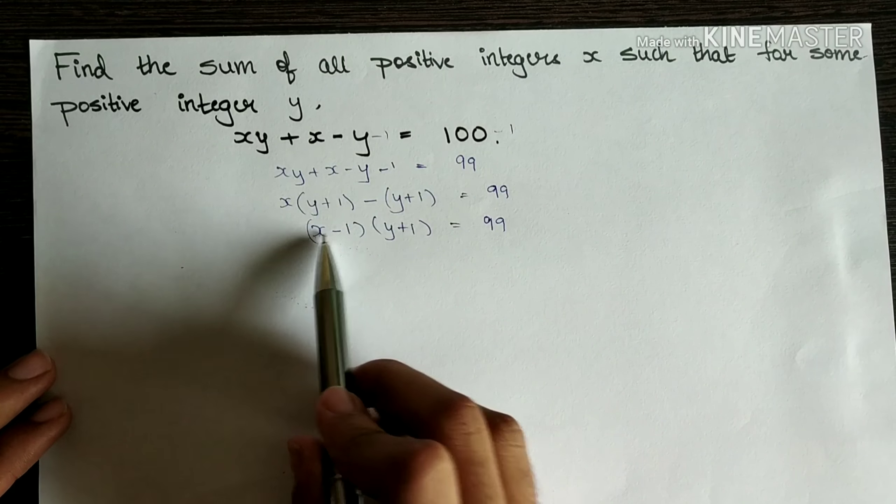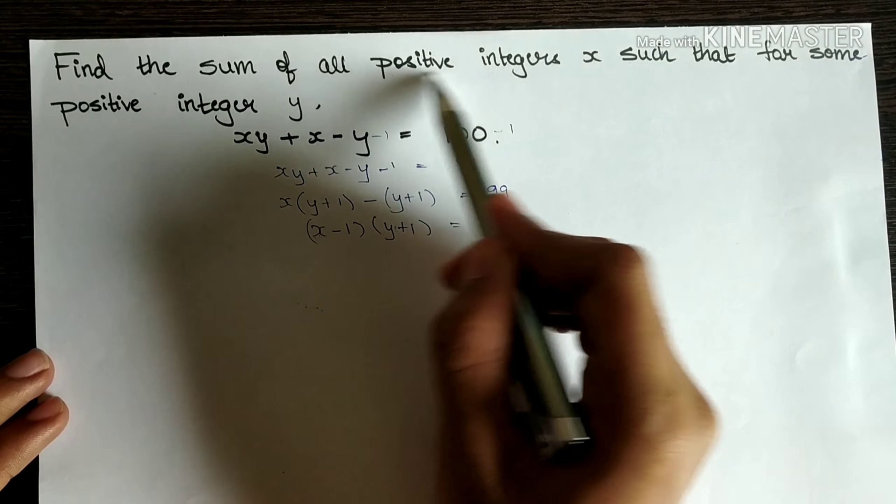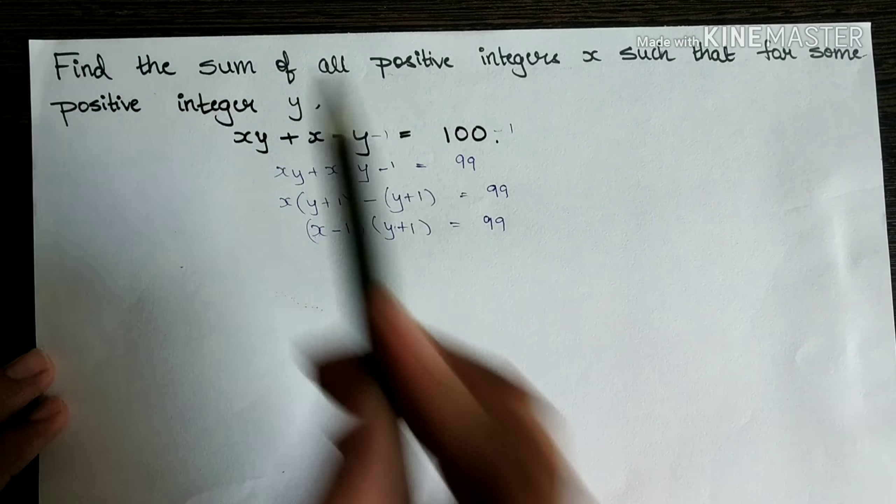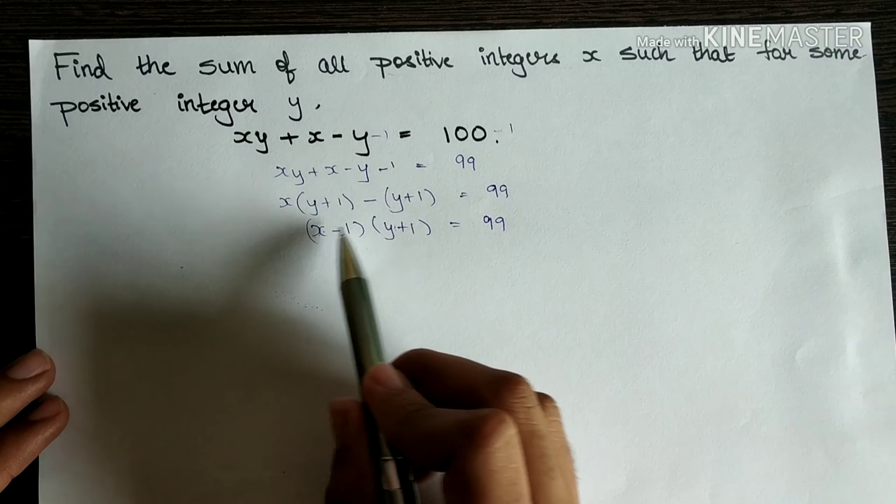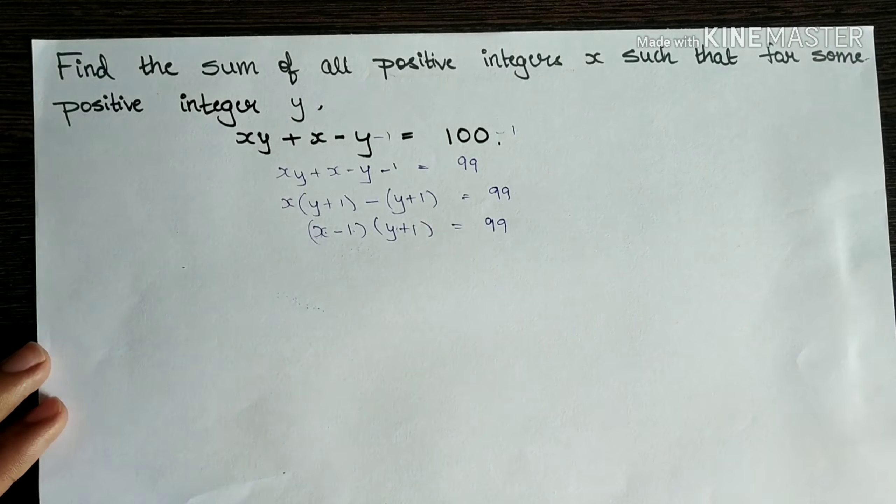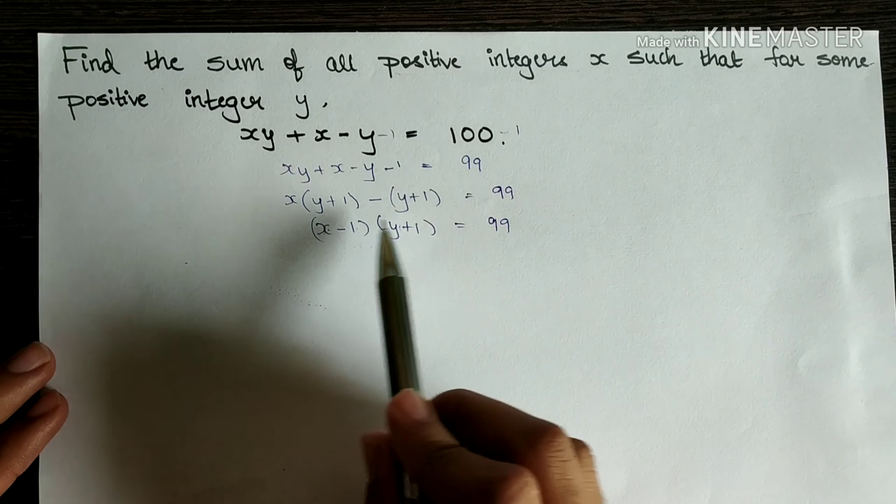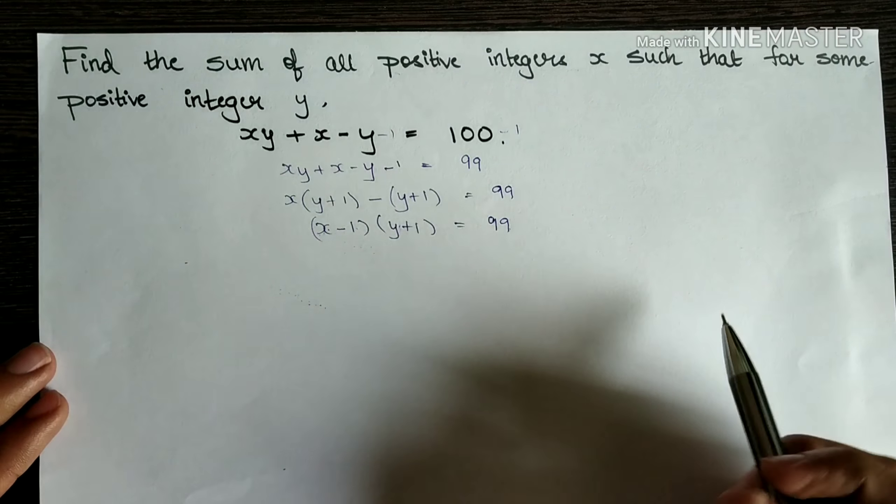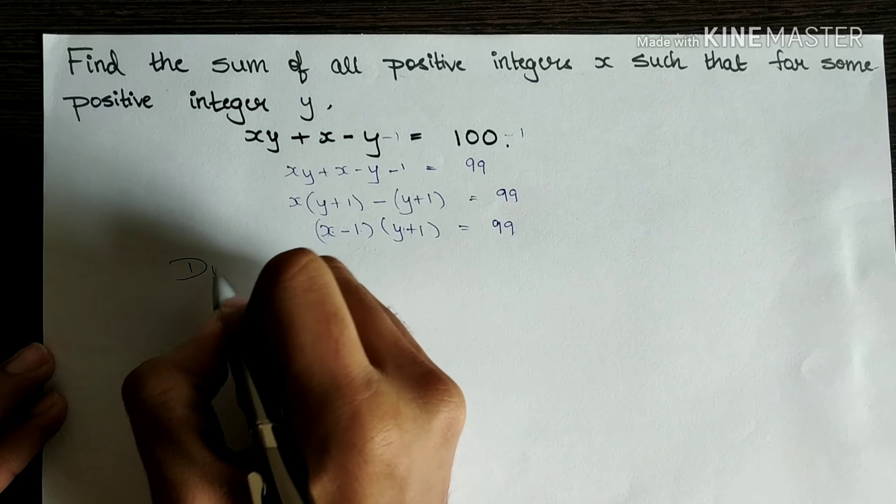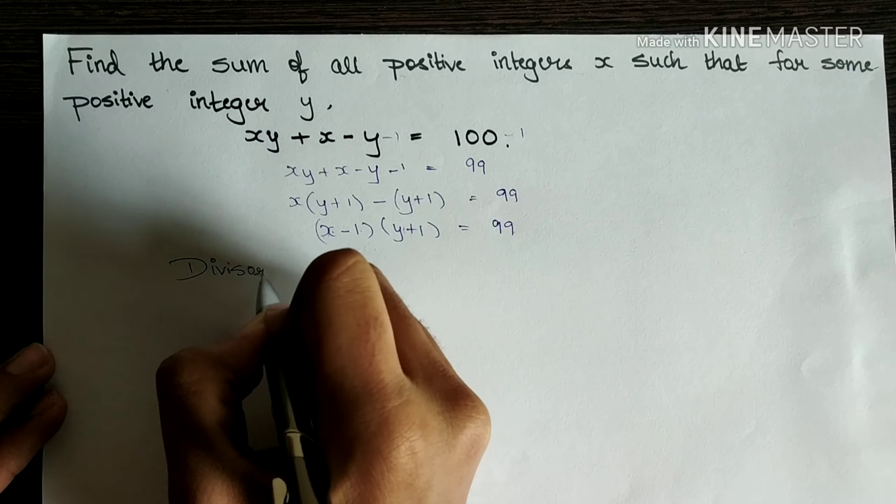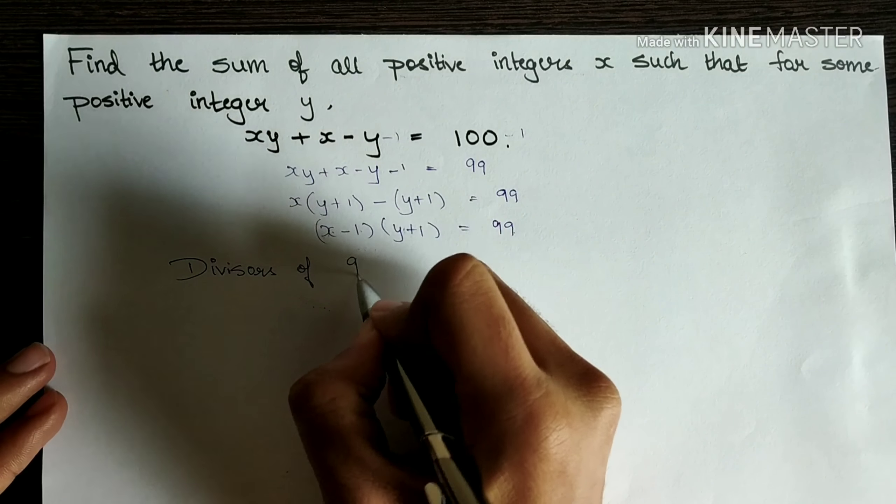Now we know that x and y both are positive integers because x positive integers x, positive integer y. So x minus 1 is also an integer, y plus 1 is also an integer. We all know that. Now multiplication of two integers is giving us 99. So let's find out what are the divisors of 99.